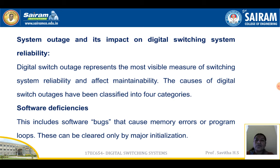System outage and its impact on digital switching system reliability. Digital switch outage represents the most visible measure of switching system reliability and affects maintainability. The causes of digital switch outages have been classified into four categories. Software deficiencies: this includes software bugs that cause memory errors or program loops, which can be cleared only by major initialization.